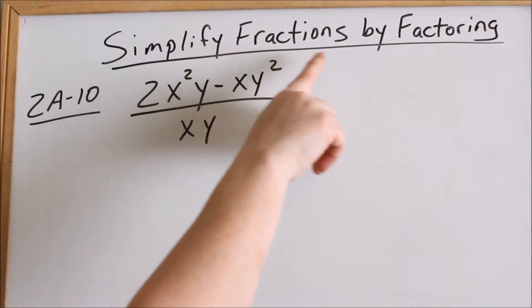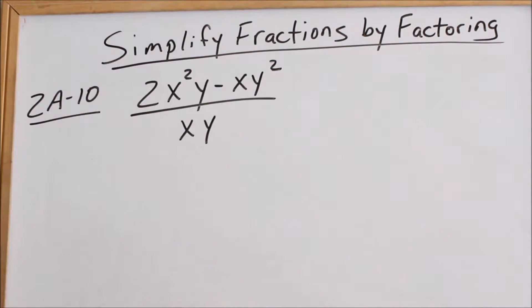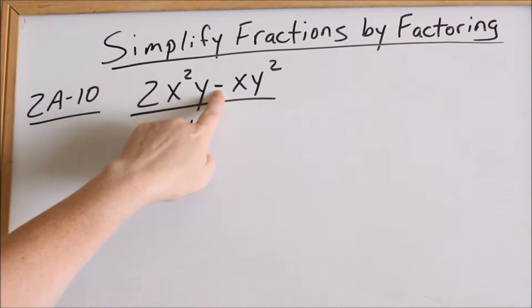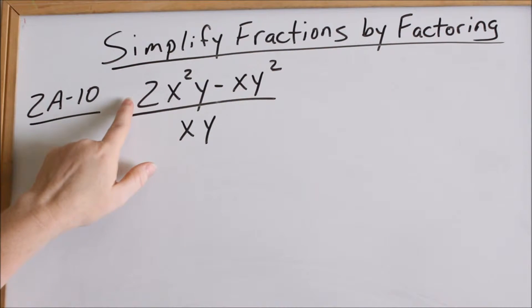Now we're going to be simplifying fractions by factoring. Here we're on 2A-10, and we have this fraction. Just know, you can't cancel all these things unless you're multiplying. This is not multiplied to this. These two terms are connected together by the subtraction sign. When two terms are connected together by an addition or a subtraction sign, you have to factor out first.